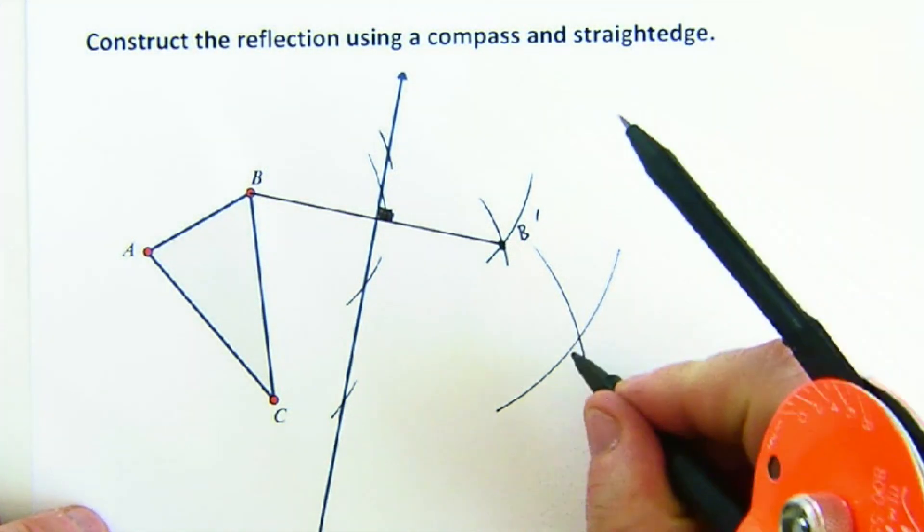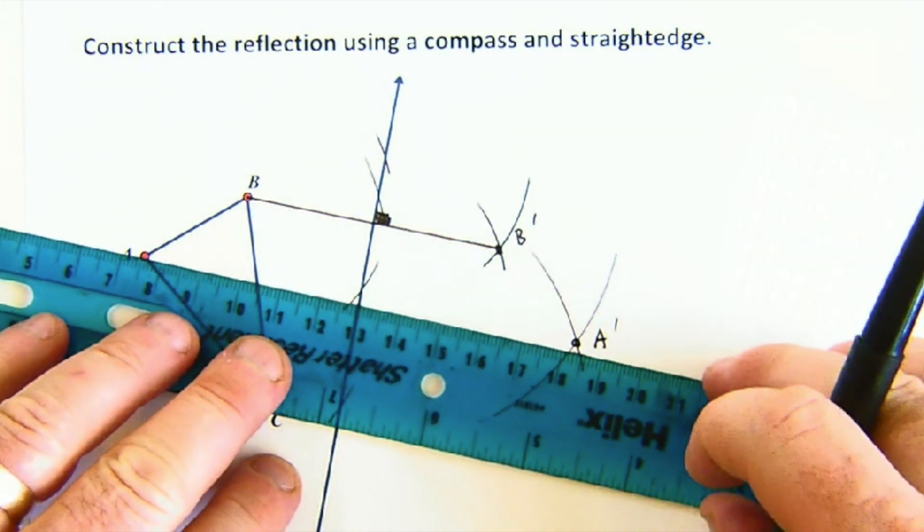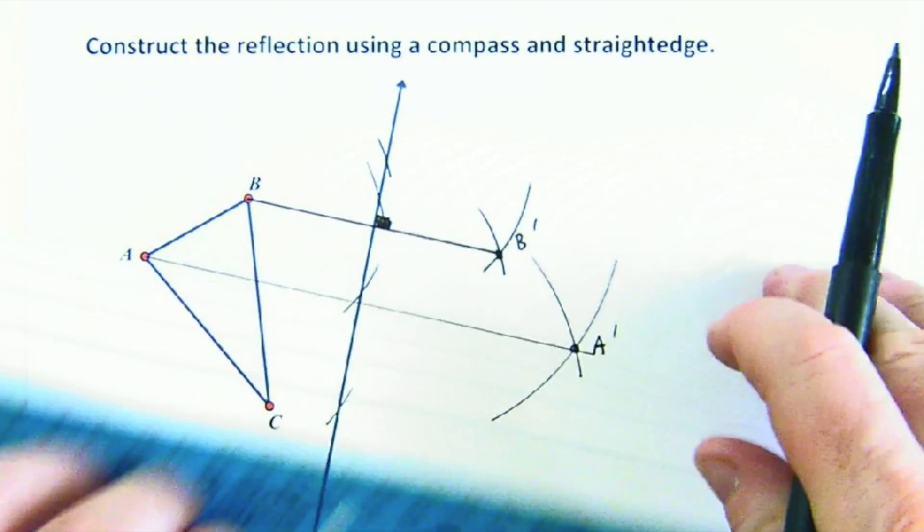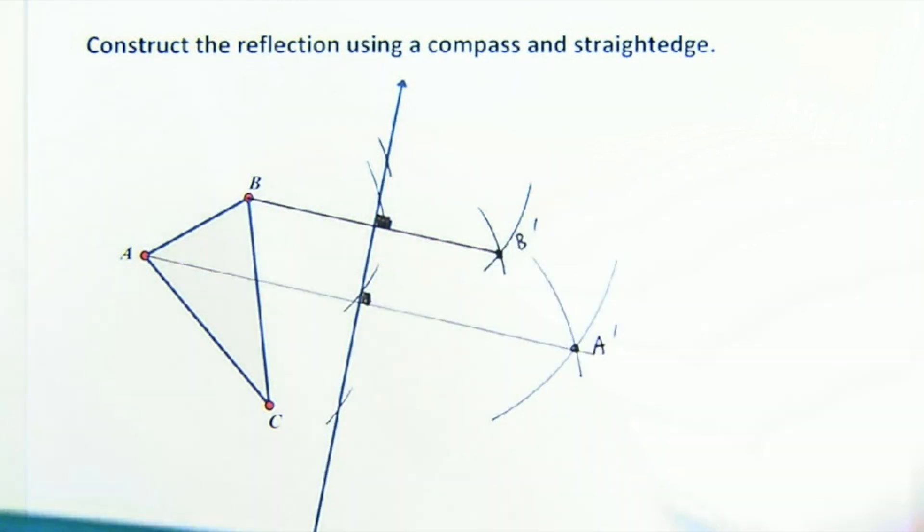This is A prime right here. And so, again, I don't need to do this, but I think on the first one I'd like to do it. Again, to show you that what we're creating are perpendicular bisectors. That's what that line is becoming each time we do this.